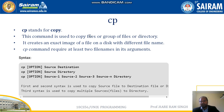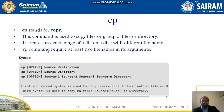The next command is cp, which stands for copy. The cp command is used to copy files, groups of files, or directories. It creates an exact image of a file on disk with a different filename. The cp command requires at least two filenames as arguments and creates an exact copy of a file.